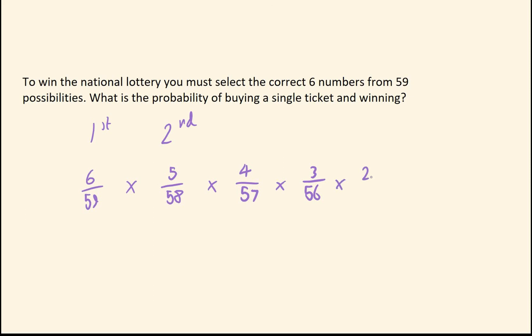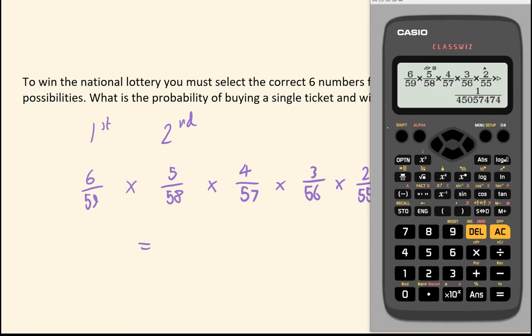And if you work this out, this works out as being a huge number. You basically have all those 50s being times together on the bottom. So if you work it out, you get an answer of 1 over 45 million. So it's really unlikely to happen.